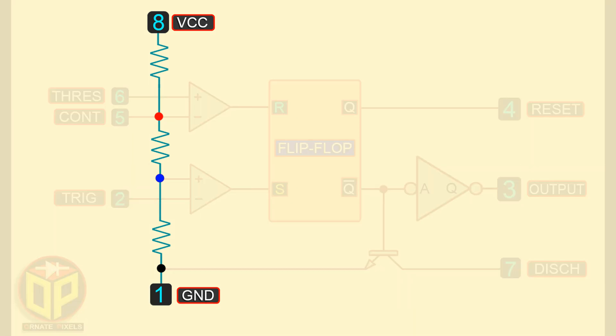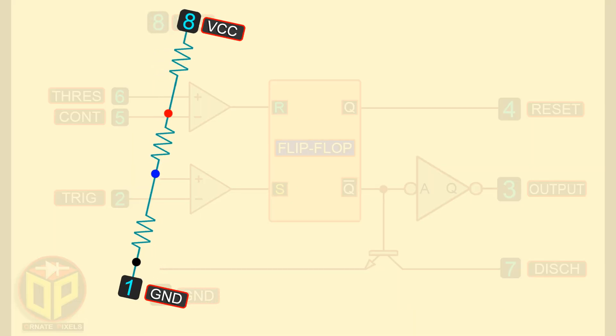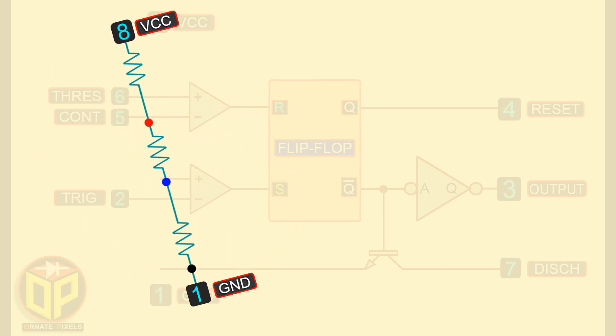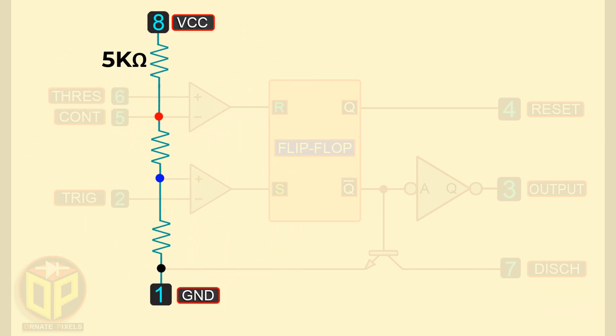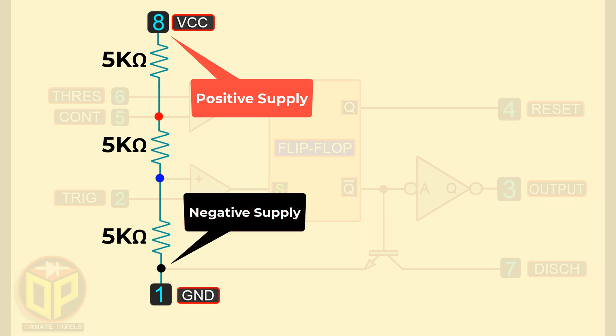For biasing the input section of the IC, there are three resistors in series. The value of these three resistors is 5 kilo ohms. Here is the positive supply of these series resistors and here is negative supply. So, it is a voltage divider circuit.